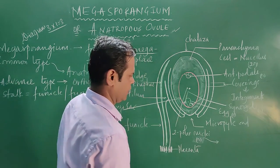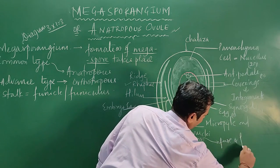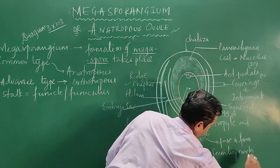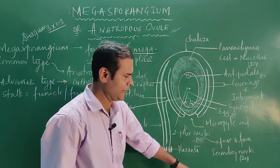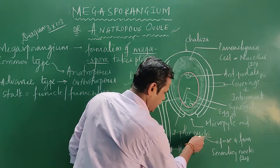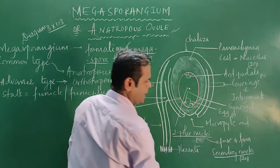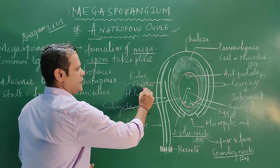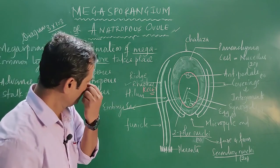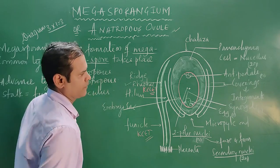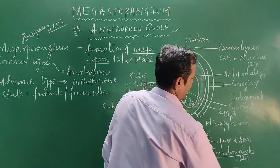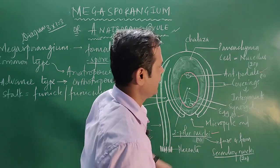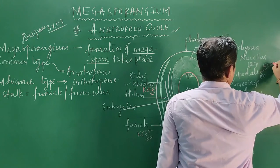The two polar nuclei fuse to form the secondary nucleus, which is diploid (N + N = 2N). So remember: polar nuclei are haploid, and the secondary nucleus is diploid. Raphe, funicle, antipodals, egg, and polar nuclei — all these are asked in KSEB or NEET-level exams.